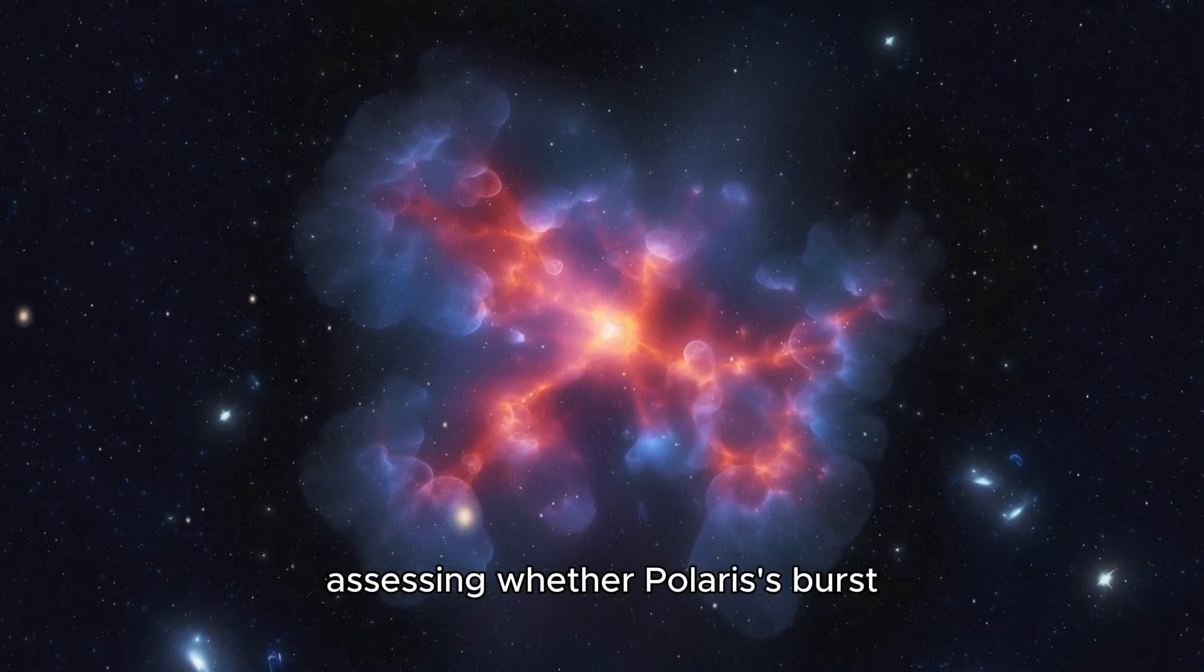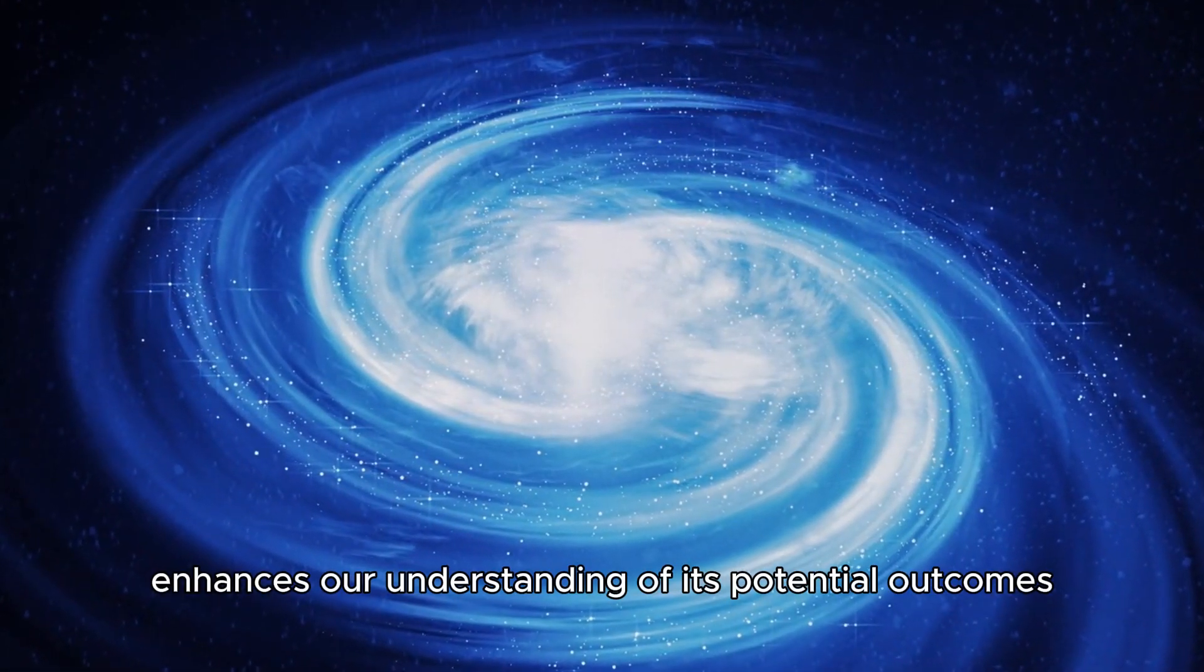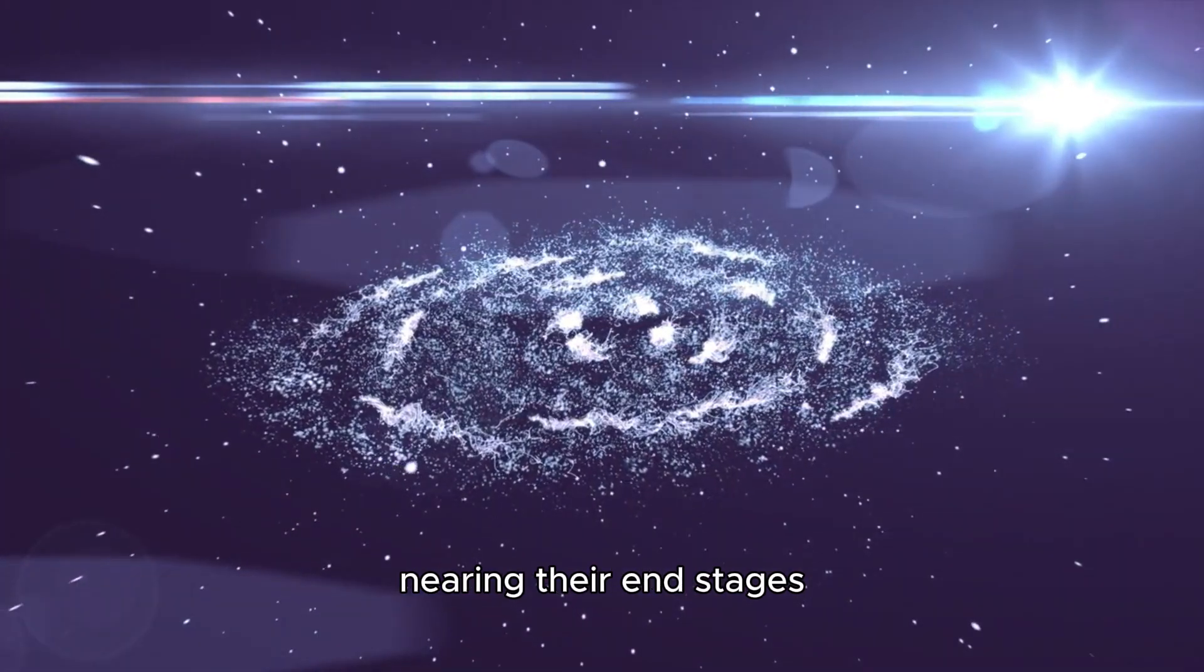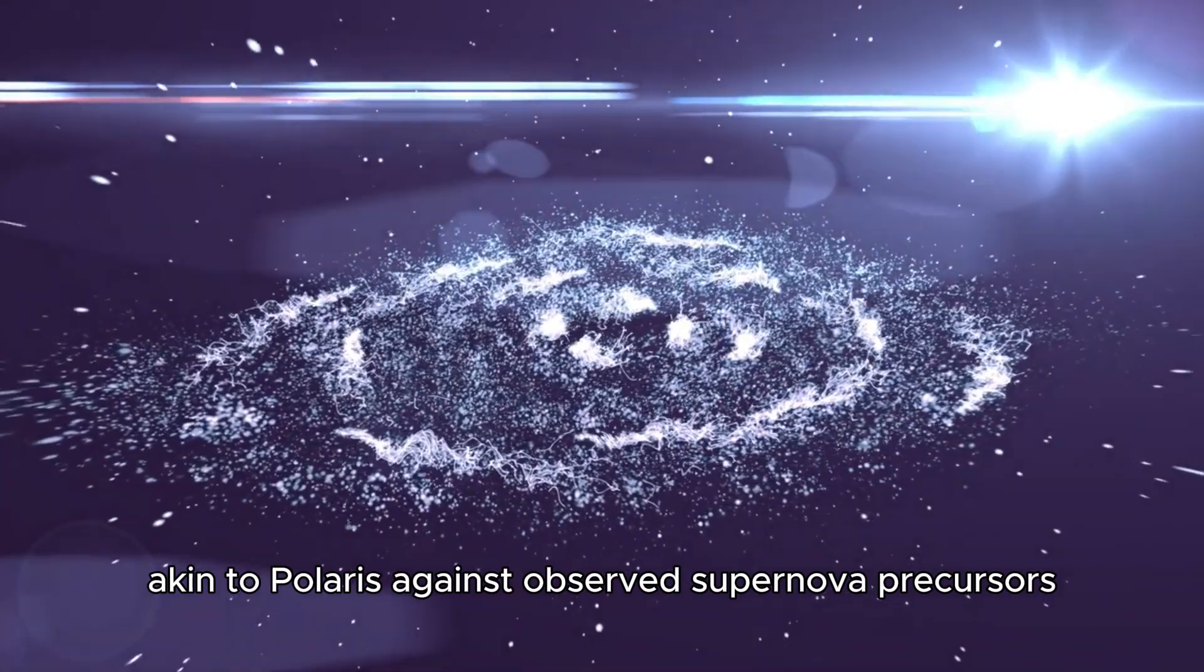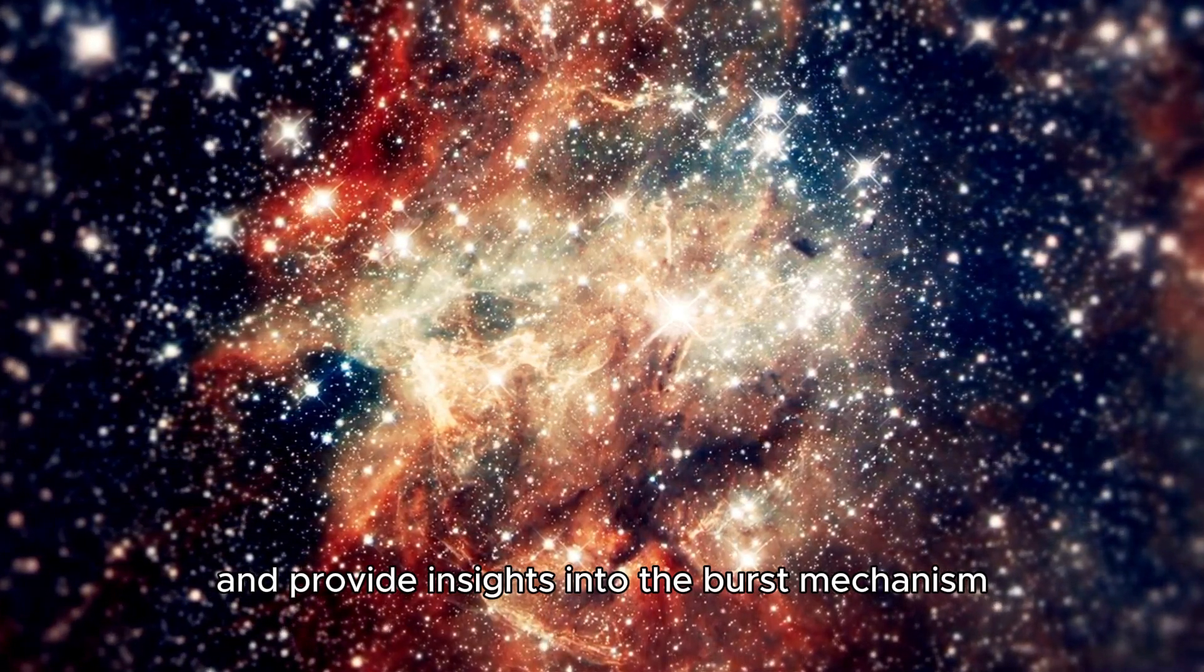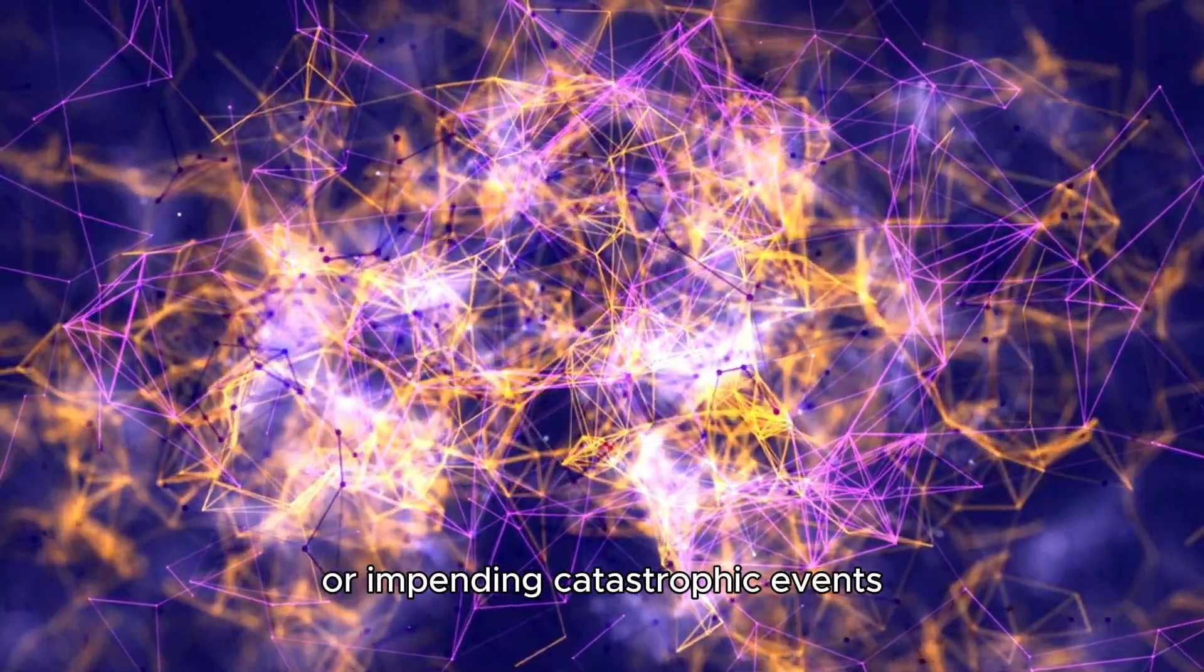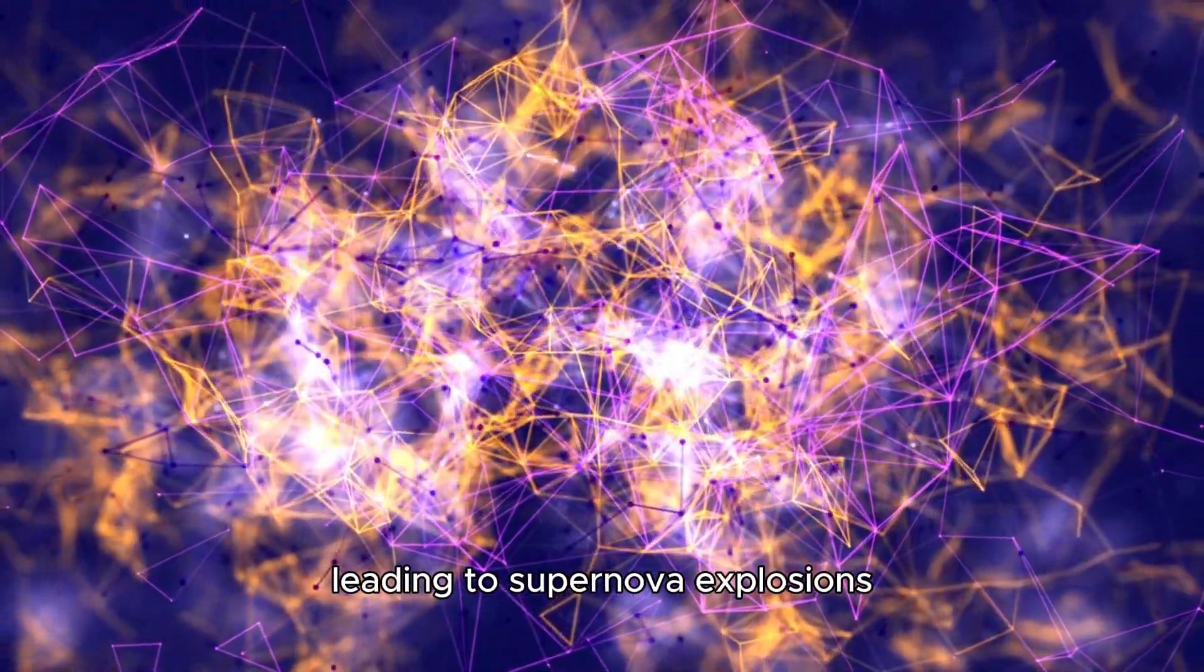Assessing whether Polaris' burst might lead to the formation of nebulae or distinct elemental distributions enhances our understanding of its potential outcomes. Another crucial area of investigation involves evaluating the pulsational variability of stars nearing their end stages. This comparative analysis can help gauge similarities or deviations and provide insights into the burst mechanism. Pulsational variability in stars nearing the end of their lives may be indicative of internal instabilities or impending catastrophic events, offering clues to the evolutionary processes leading to supernova explosions.